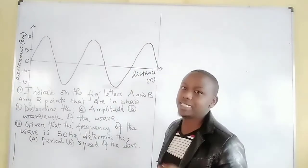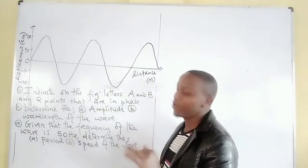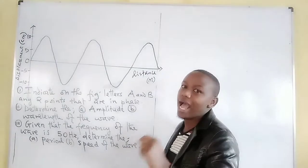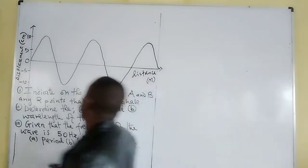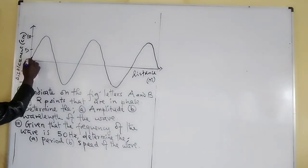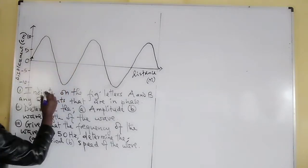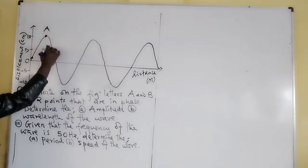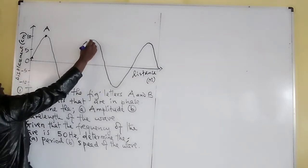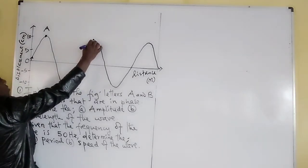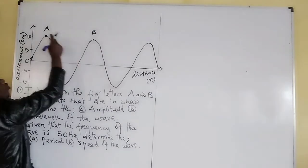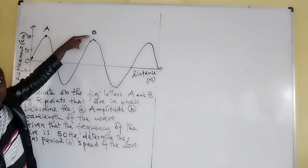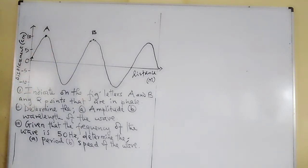When we say two particles are in phase in a given wave, we mean that at any given moment those two points are moving in the same direction and they are at the same position. So if the wave is flowing upwards then downwards, a point at A and a point at B are in phase because they are moving in the same direction and at the same level.